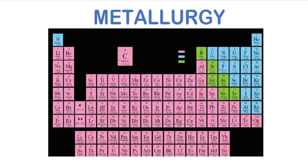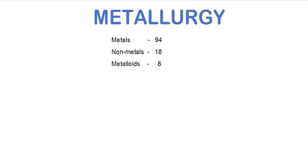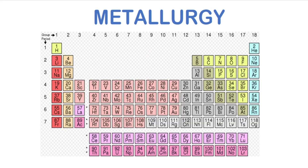This is the present form of the periodic table, in which the elements are filled up to the seventh period. The present form of the periodic table contains 118 elements. Of these, 18 are non-metals including hydrogen, six are metalloids — namely boron, silicon, germanium, arsenic, antimony, and tellurium — and the remaining 94 elements are metals.